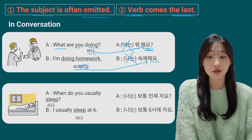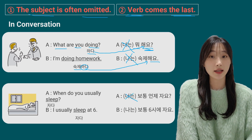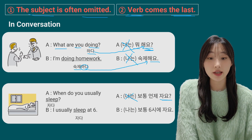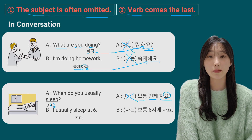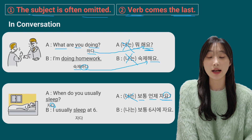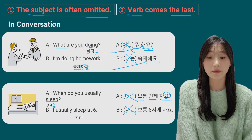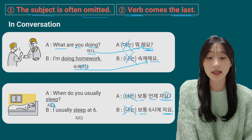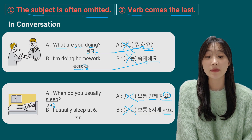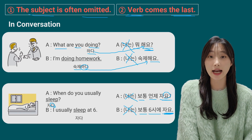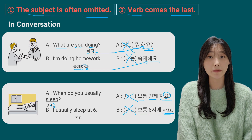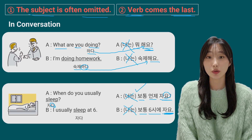'When do you usually sleep?' — subject omitted, verb comes last. Usually = 보통 (adverb, comes first), when = 언제, sleep = 자다, 다 conjugated to 요: so 보통 언제 자요? Answer: 'I usually sleep at 6' — subject omitted. Usually = 보통 (first), at 6 = 여섯 시에 (second), sleep = 자요 (verb, last): 보통 여섯 시에 자요. Let's repeat: 보통 언제 자요? / 보통 여섯 시에 자요.